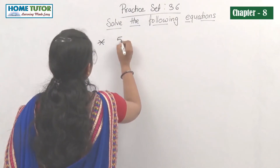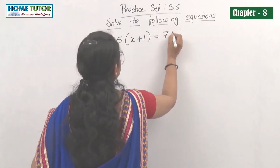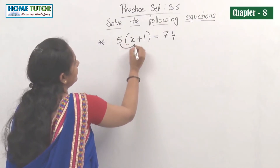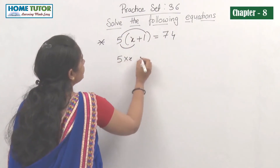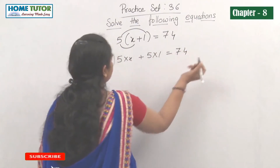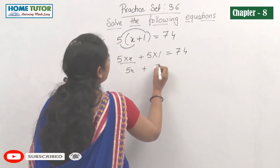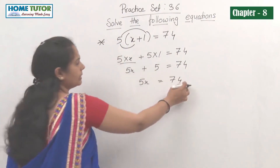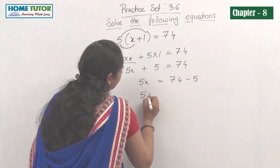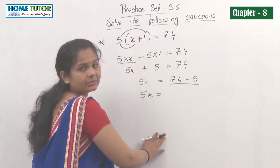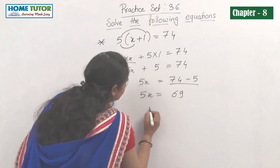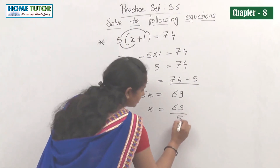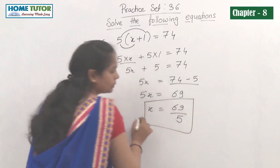Next equation: 5 into bracket (x plus 1) equals 74. We have to find the value of x. Open the bracket: 5 multiplied by x plus 5 multiplied by 1, giving 5x plus 5 equals 74. The plus 5 moves to the right as minus 5: 5x equals 74 minus 5 equals 69. So x equals 69 divided by 5, giving x equals 69/5.